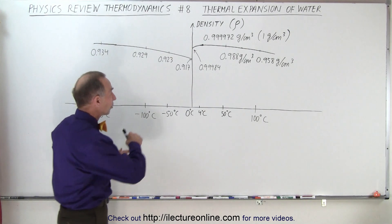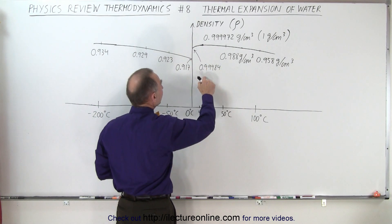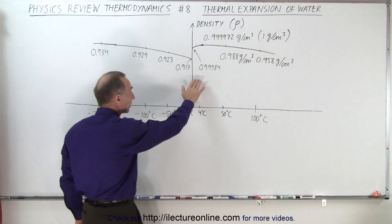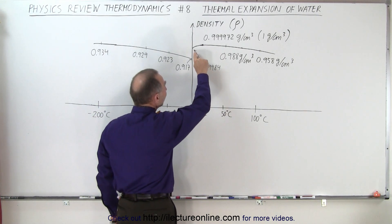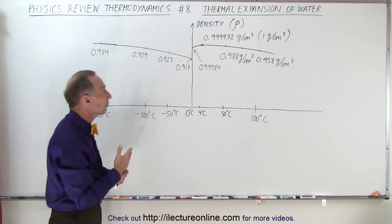We see the sudden jump as soon as ice becomes water. It becomes more dense. It jumps up to almost one gram per cubic centimeter, not quite, about 0.9984. And notice that it continues to get more dense as it heats up from 0 to 4 degrees Celsius.